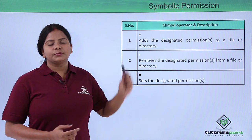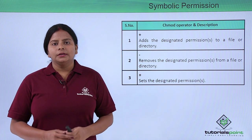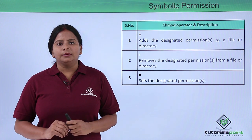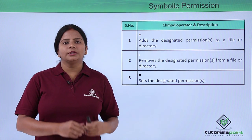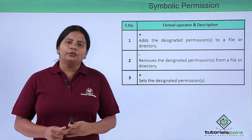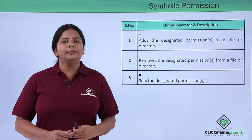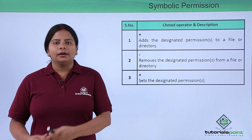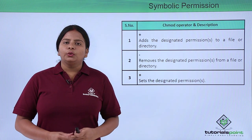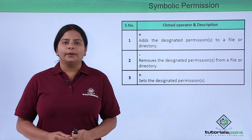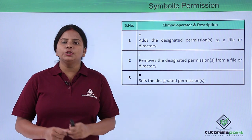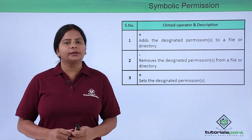The minus symbol is used for removing a certain permission. For example, if a group already has read, write, and execute permissions and I want to remove all of them, I use minus r. If I want to remove only write permission, I use minus w.